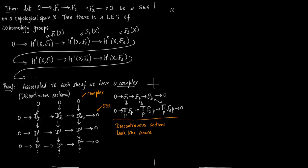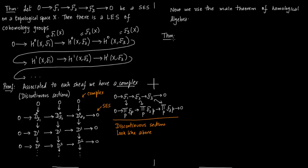So we have talked about complexes and how short exact sequences come about. They arise just because passing to stalks does not destroy exactness, and that is how we go from discontinuous sections to form the exact sequences. Now we use the main theorem of homological algebra to get the long exact sequence. Let us write down what that theorem states for completeness.